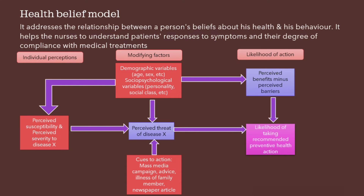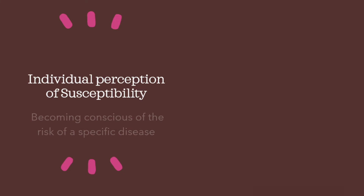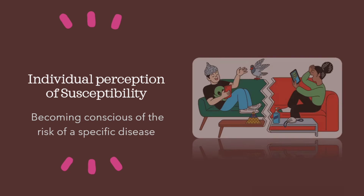Susceptibility means the risk of getting a disease — how does an individual become conscious of the risk of a specific disease that is likely to affect him. For example, when the COVID outbreak occurred, we all knew that we are susceptible to the disease. Now, we had different perceptions regarding that. Some believed it to be a myth, that it cannot happen. Some believed it to be real. That is individual perception of susceptibility.